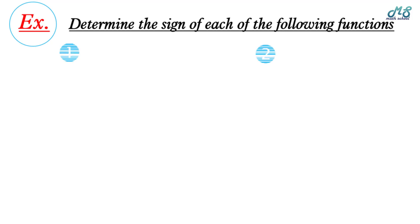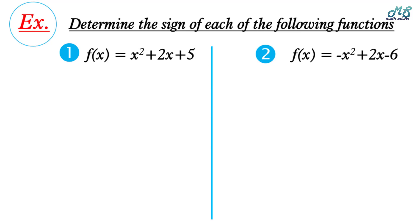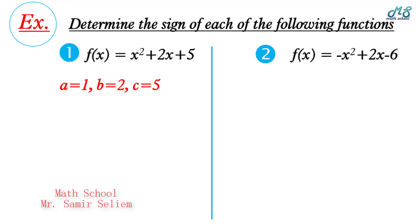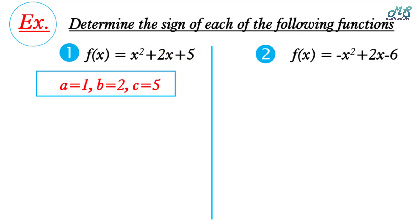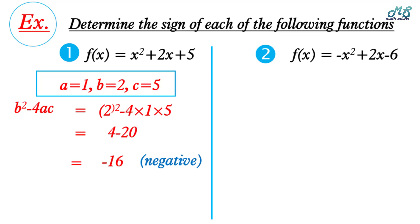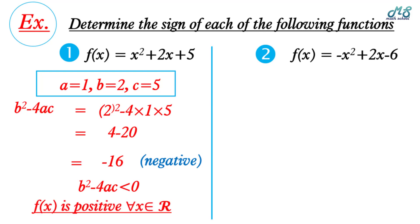Example: determine the sign of each of the following functions. Number one, f(x) = x² + 2x + 5. Find a, b, c: a = 1, b = 2, c = 5. Find the discriminant: b² - 4ac = 2² - 4(1)(5) = 4 - 20 = -16. The discriminant is negative, so b² - 4ac < 0.